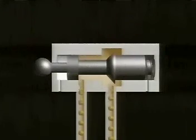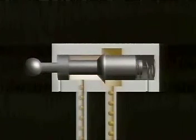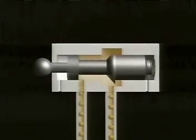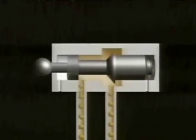In poppet valves, a sphere or cone is pressed onto the valve seat, closing off the flow passage. Poppet valves are tight sealing and designed with two or three line connections.